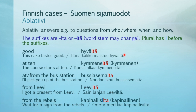'This cake tastes good': Tämä kakku maistuu hyvältä. 'At ten' is kymmeneltä — basic form: kymmenen. 'The course starts at ten': Kurssi alkaa kymmeneltä. 'At or from the bus station' is bussiasemalta. 'I'll pick you up at the bus station': Noudan sinut bussiasemalta. 'From Leevi' is Leeviltä. 'I got a present from Leevi': Sain lahjan Leeviltä.